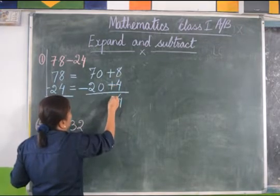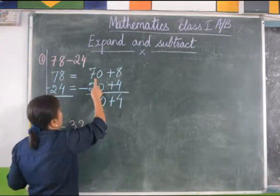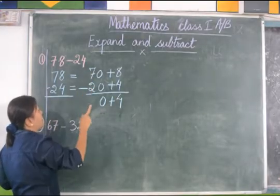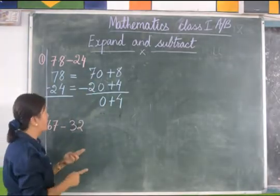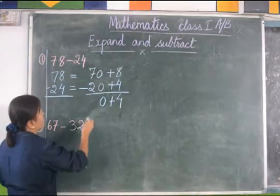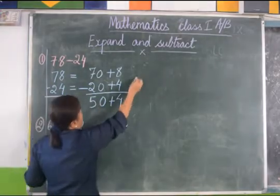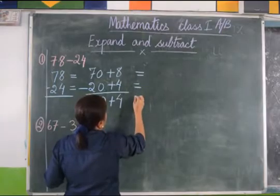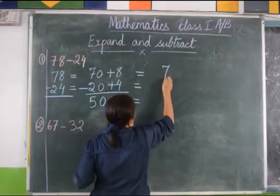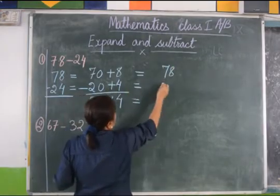We will bring down this plus. 0 minus 0 is 0. For the tens: 7 minus 2. We keep the bigger number on top — 7 — and 2 on our finger: 7, 6, 5. Now we will write these numbers in compact form. 70 plus 8 is 78. 20 plus 4 is 24.